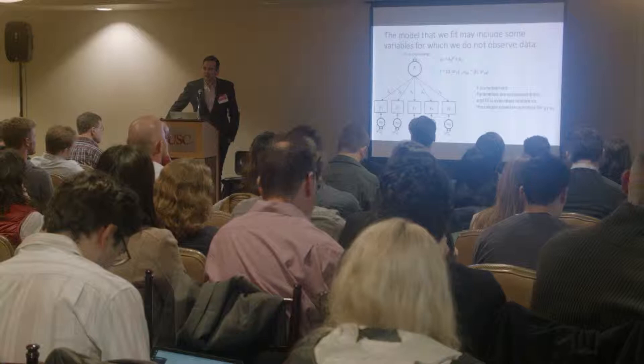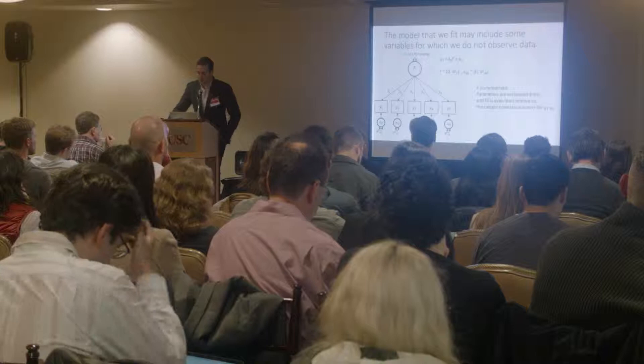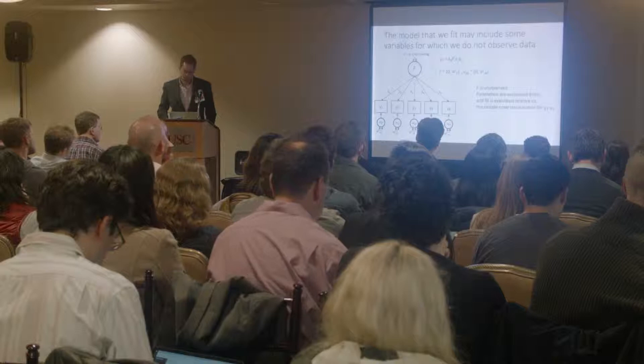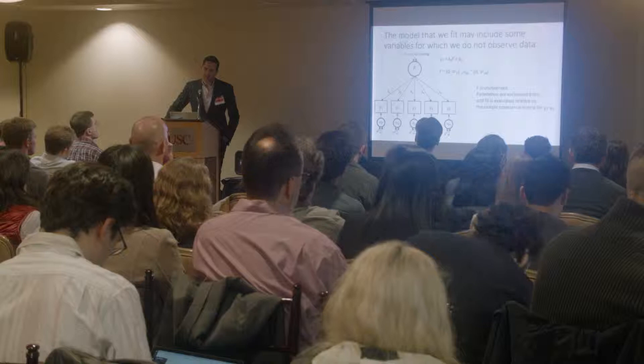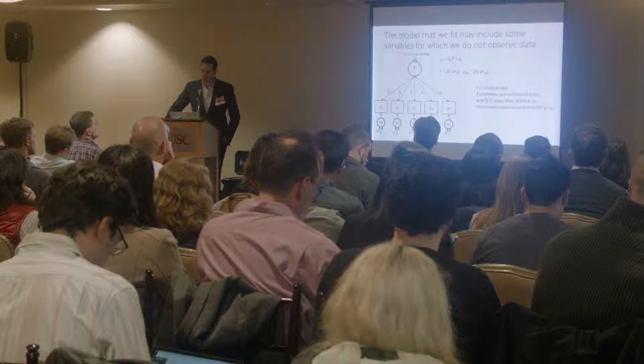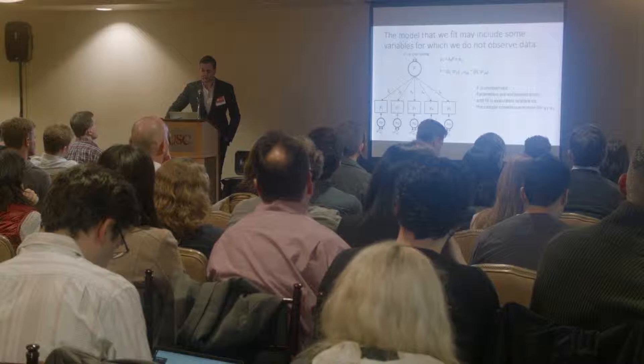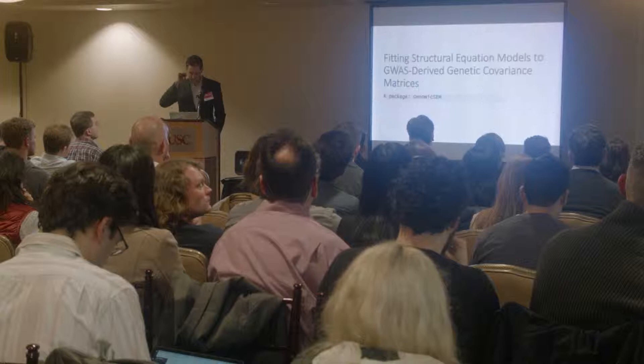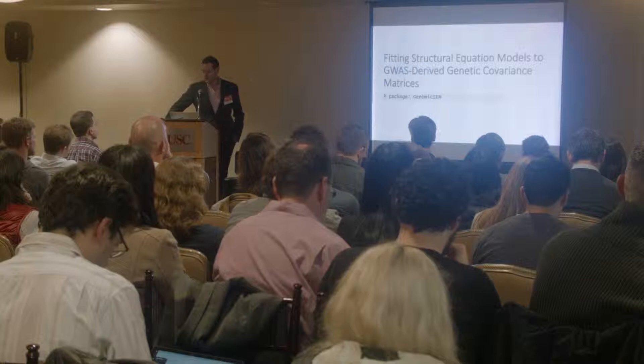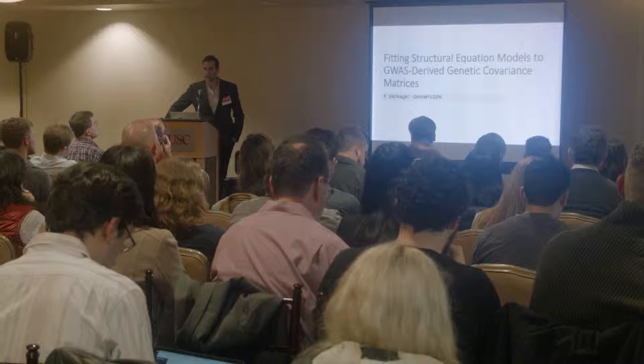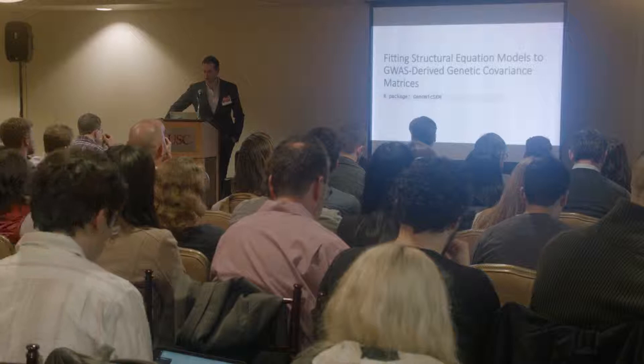We don't need to only include variables that we've measured data for. We can specify that there is a latent or unobserved dimension — a factor — that underlies liability towards five different outcomes, Y1 through Y5. We evaluate the fit and estimate parameters relative to the covariance matrix among the observed variables. This is an identified model, so nothing is stopping us from evaluating it even though we haven't measured F. Genomic SEM uses these exact principles to model genetic covariance matrices derived from GWAS summary statistics using a multivariate version of LD score regression, all self-contained within the R package.